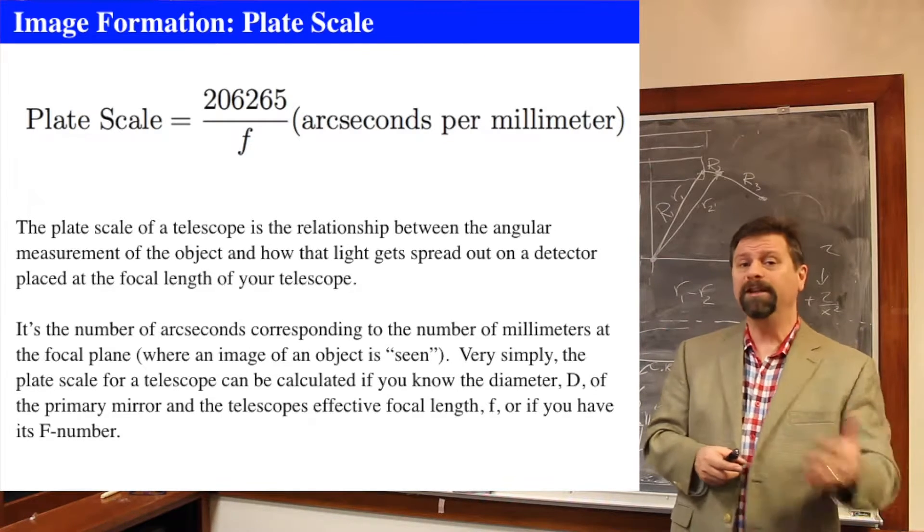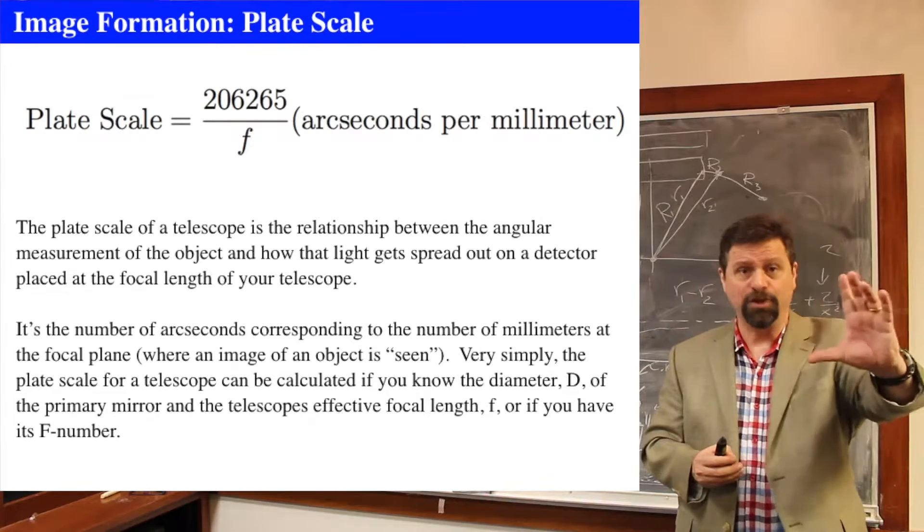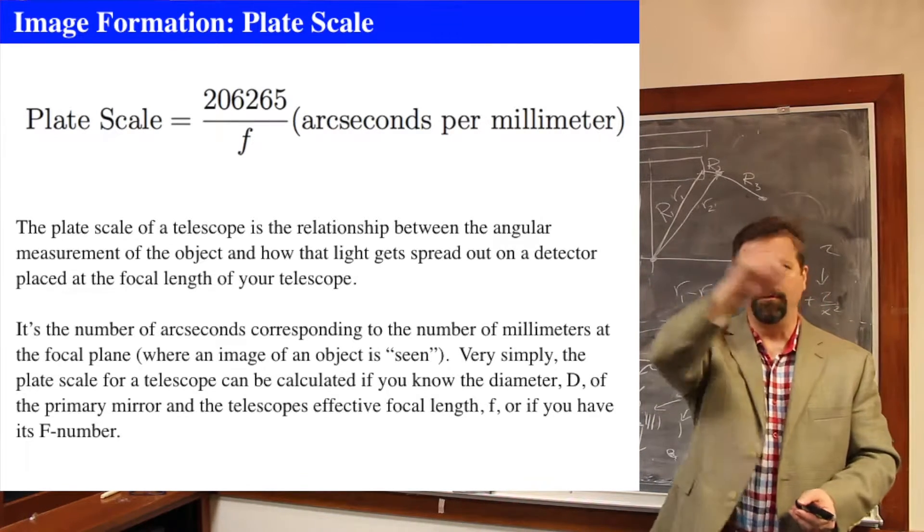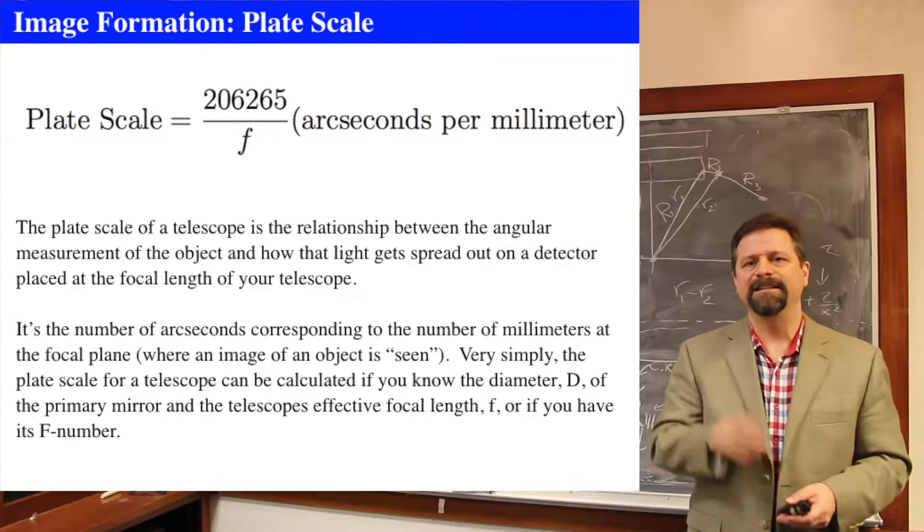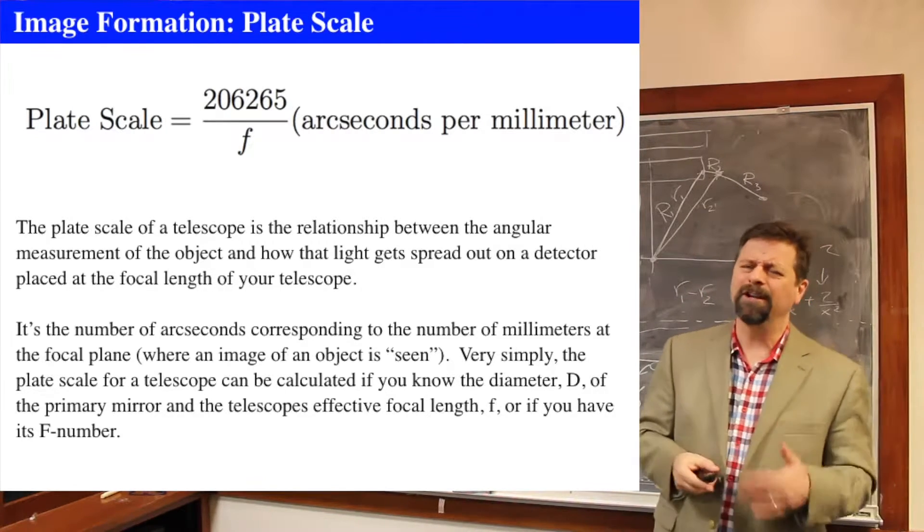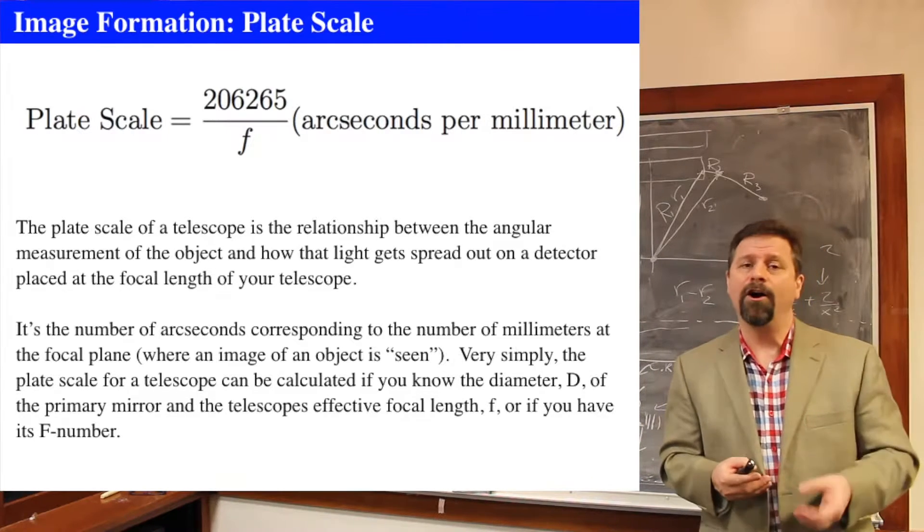Another way of thinking about it is if you have a really, really long focal length, it's like looking down a tube with no lens, right? So you're just saying, oh, I want the whole thing, but then the detector looks at a specific little area.